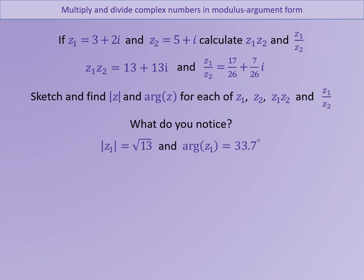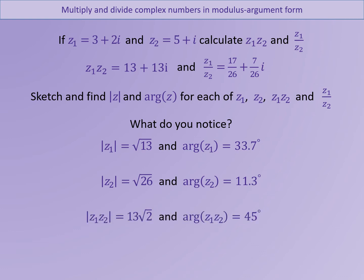So the values we've got are: the modulus of Z1 is root 13 and the argument of Z1 in degrees is 33.7. For Z2, the modulus was root 26 and the argument was 11.3 degrees. For Z1·Z2, the modulus is 13 root 2 and the argument is 45 degrees. And then for the quotient, the modulus is root 2 over 2 and the argument is 22.4.